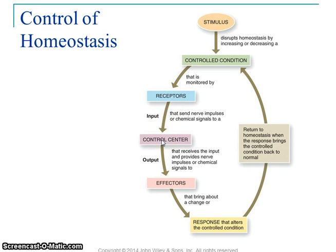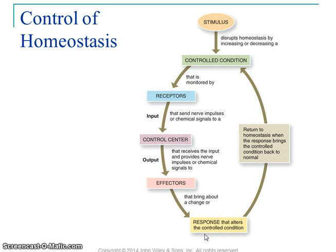The control center is going to be the brain or spinal cord — part of the nervous system. The nervous system takes in that information and decides what to do, then sends information out to effectors. Effectors affect change — they make something happen. That's going to be glands that can release hormones, or muscles that can contract. And that way you've got a response, something changes, and hopefully we go back into balance.